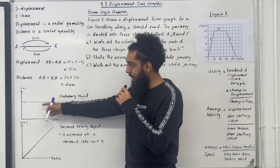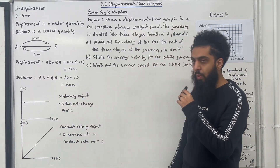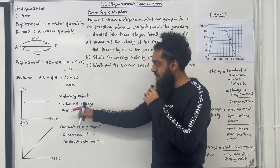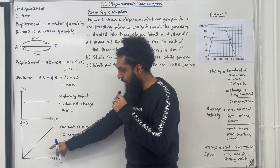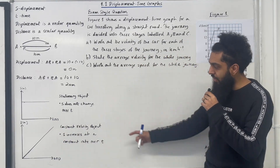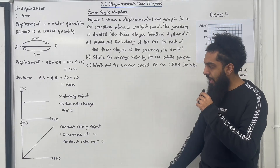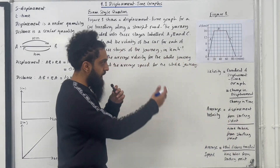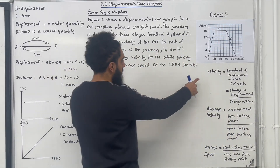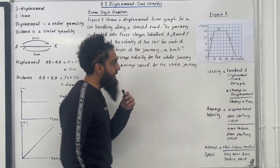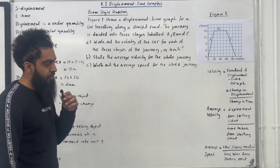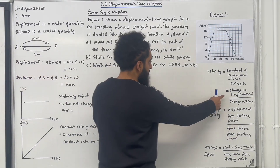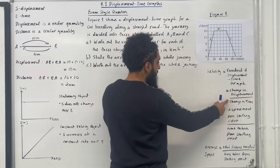Consider the following displacement-time graph. Here, we have a stationary object because S does not change over T. For a constant velocity object, S increases at a constant rate over T. The velocity of a particle is given by the gradient of the displacement-time graph — in other words, the change in displacement divided by change in time.